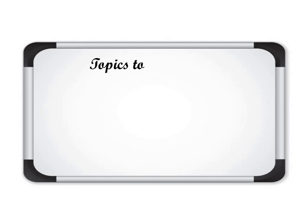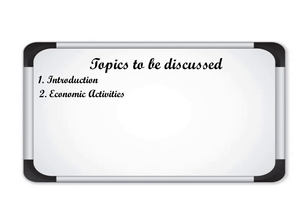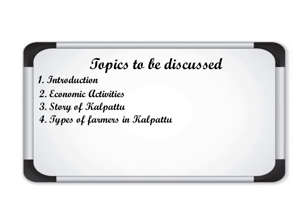This is going to be our lecture number 1. The topics we will discuss today are: number 1, introduction of the chapter; number 2, economic activities — we must know the main economic activities divided in India before discussing different types of work; number 3, the story of Kalpattu village in Tamil Nadu and what type of work the people there do; and number 4, types of farmers in Kalpattu. At last, we will take homework.